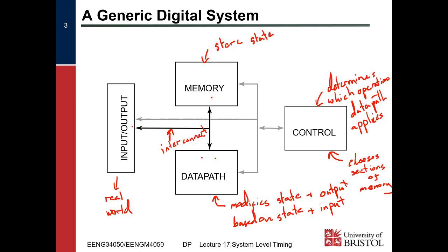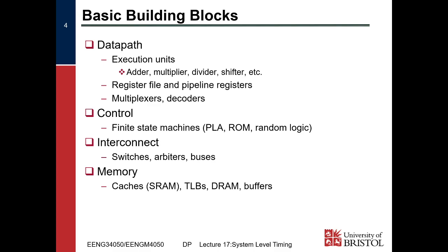So this is generally how a digital system works — five components: input, output, memory, data path, and control. Looking at basic building blocks: your data path is where all data processing goes on, taking one piece of data and converting it via a well-known function to another. We have execution units like adders, multipliers, dividers, and shifters, all doing different arithmetic or logical operations on data.